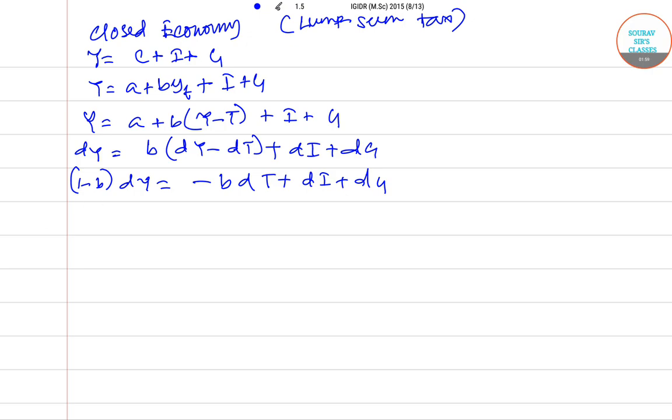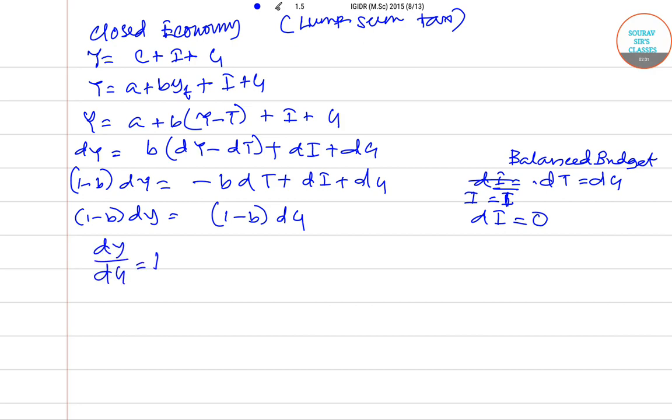So dY equals minus B dT plus dI plus dG. Now in the case of balanced budget multiplier, dT equals dG for balanced budget. So 1 minus B times dY is equals to 1 minus B times dG, assuming dI equal to 0 since investment is fixed, I equals I bar. Therefore dY/dG is definitely equals to 1. So option A is correct.